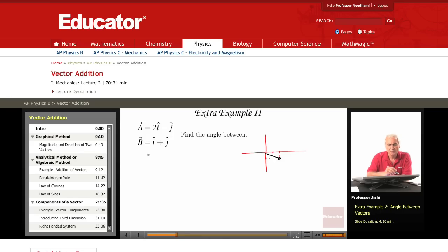B is i plus j. So this is i, means I go 1 along the x, and j I go 1 in here. And so this is B. So this is A, this is B. I want to find the angle between them.